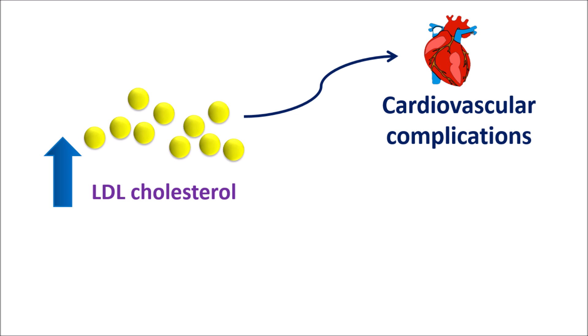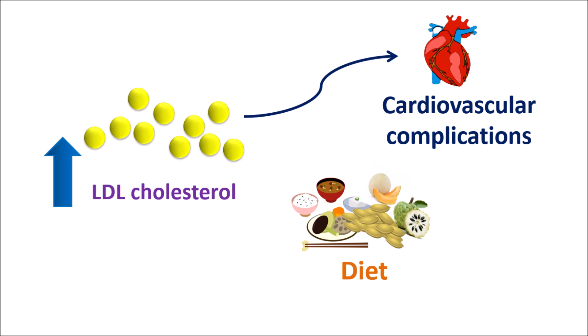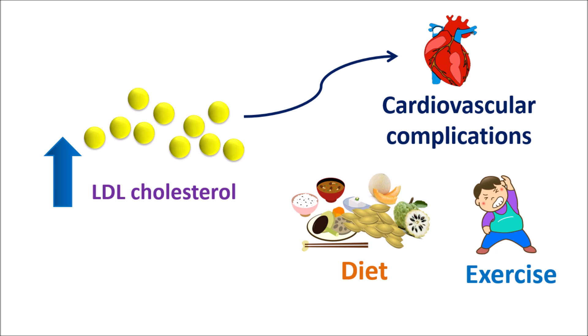Normally when LDL cholesterol is elevated we can make few dietary modifications. Diet control can reduce the fat content as well as carbohydrate content. Along with modifying the diet we can also add fruits and nuts which are rich in fiber, so that they can produce a balanced diet which can help in reducing cholesterol. Along with diet control and proper exercise, LDL cholesterol levels can be reduced. LDL cholesterol level should be maintained less than 100 mg per deciliter, which is the optimal level.